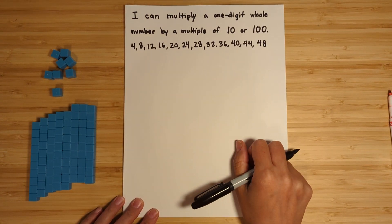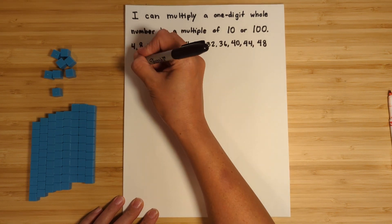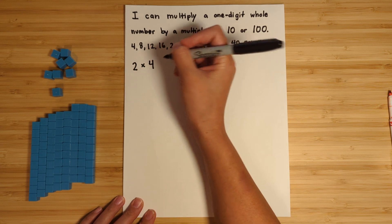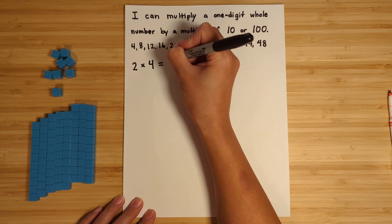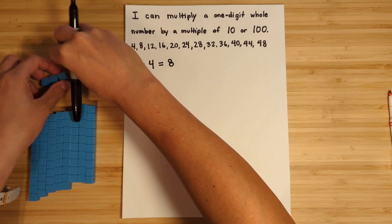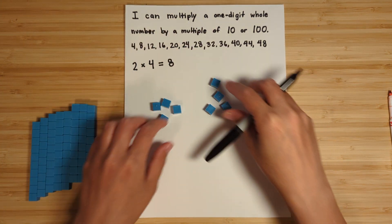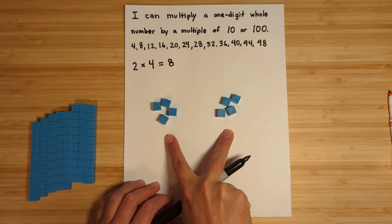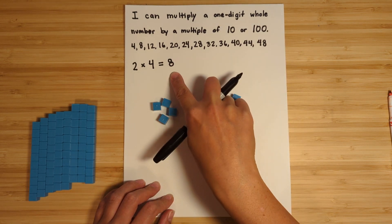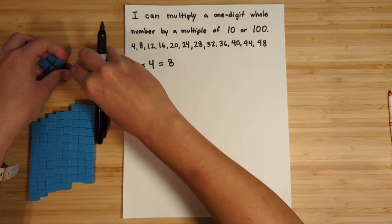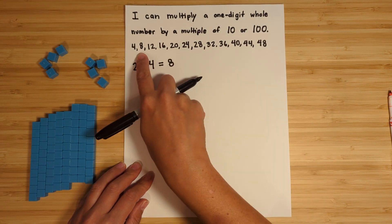All right, so let's start with a one digit by one digit. Let's look at two times four. So two times four is eight, and just to see a little visual, that's two groups of four right there - there's four, and four, and there's two groups of four. So two groups of four is equal to eight. Okay, that's part of our multiples of four, right? Two groups of four is eight.